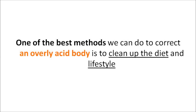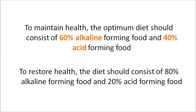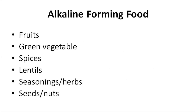One of the best methods to correct an overly acidic body is to clean up the diet and lifestyle. To maintain health, the optimum diet should consist of 60% alkaline-forming food and 40% acid-forming food. To restore health, the diet should consist of 80% alkaline-forming food and 20% acid-forming food. Generally, alkaline-forming foods consist of most fruits, green vegetables, spices, lentils, seasonings or herbs, and seeds and nuts.